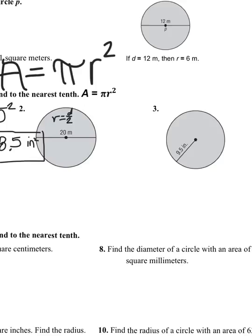So 20 divided by 2, my radius equals 10. Now when I plug it into the equation, my area equals pi times 10 squared. Area equals 314.2 meters squared.